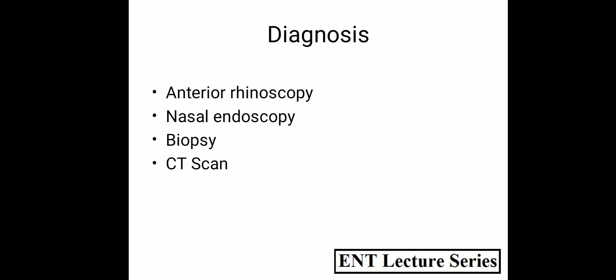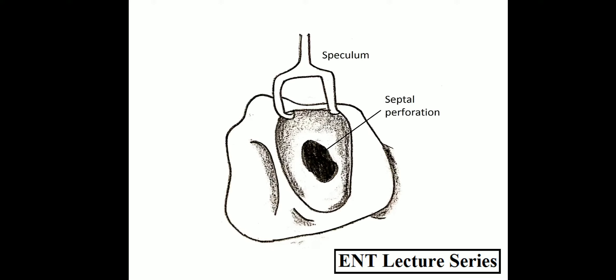Diagnosis of septal perforation can be by anterior rhinoscopy, which is an OPD procedure done by Thudichum nasal speculum. It can also be done by nasal endoscopic examination, or if there is a mass or we are suspecting any granulomatous condition, then we should always take a biopsy. If required, radiologically we can go for CT scan also. This is a picture of anterior rhinoscopy where a black color perforation is seen in the nasal septum.